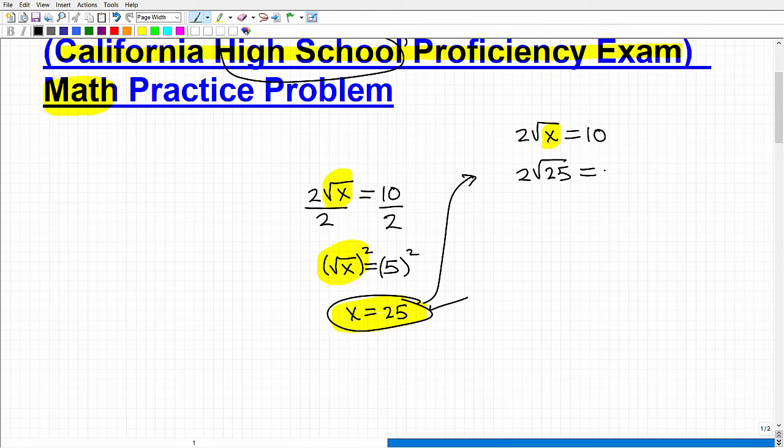And we're going to ask ourselves, is that equal to 10? Because if the left hand side here is equal to the right hand side, then you have a good value for your solution. That's the whole idea behind checking an equation. So what's the square root of 25?